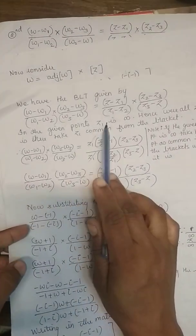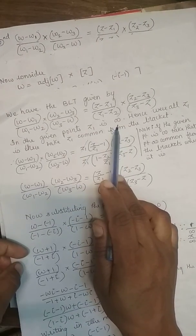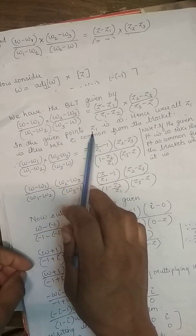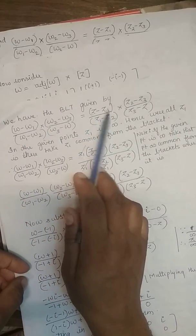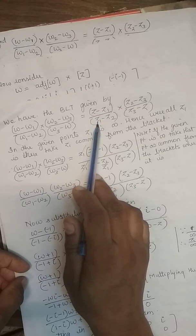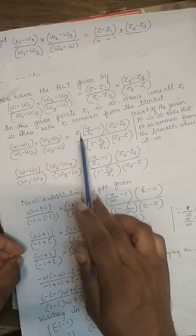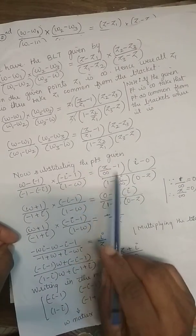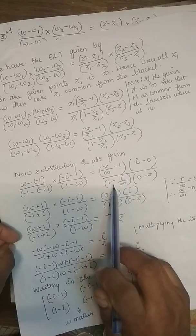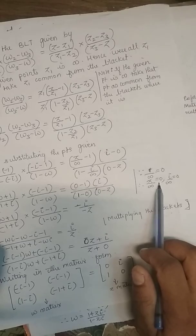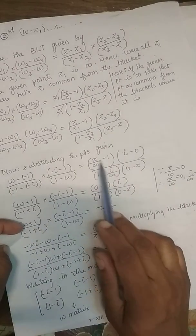Whenever a point Z1 equals infinity appears, do not directly substitute. Instead, take Z1 common from the bracket where it appears. This gives Z/Z1 minus 1 and 1 minus Z2/Z1 terms, which cancel Z1. Then substituting Z1=infinity, any term Z/infinity or i/infinity equals 0, so those terms vanish.